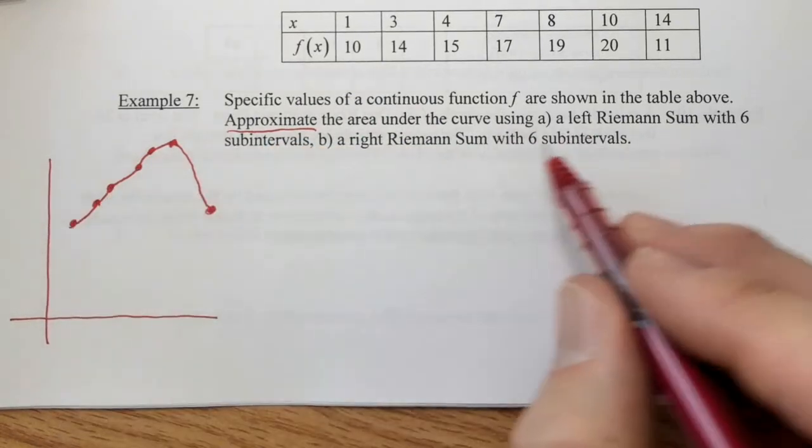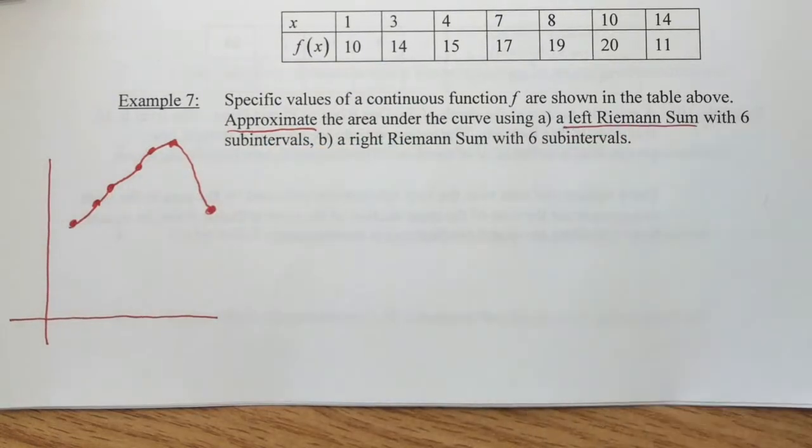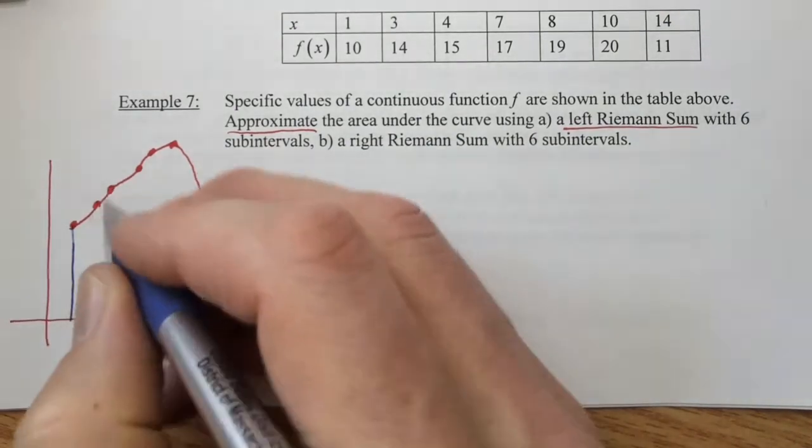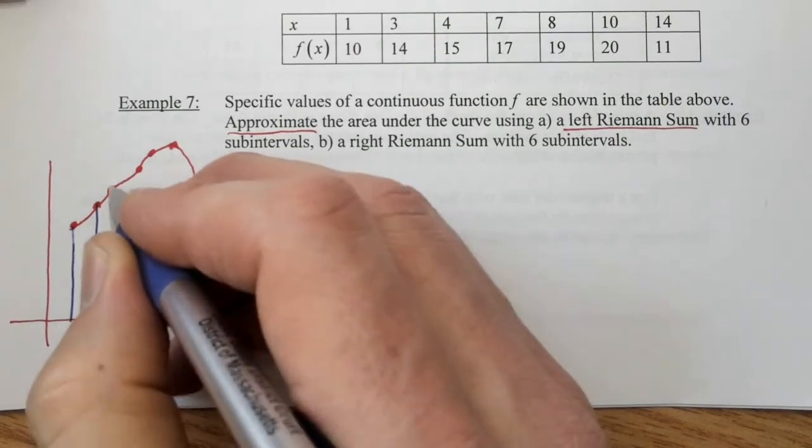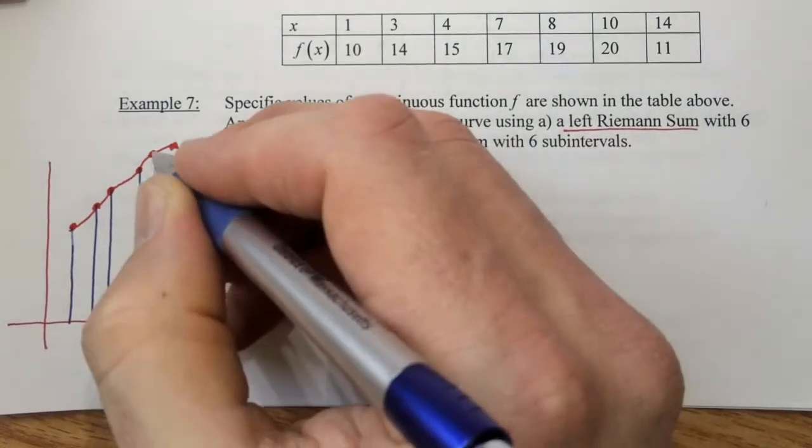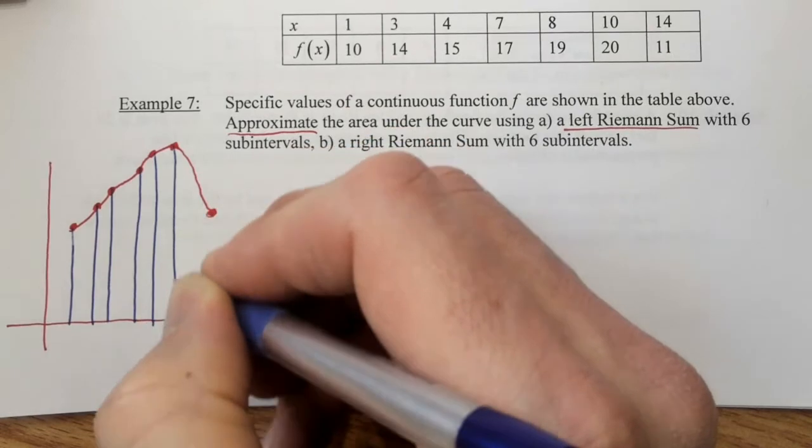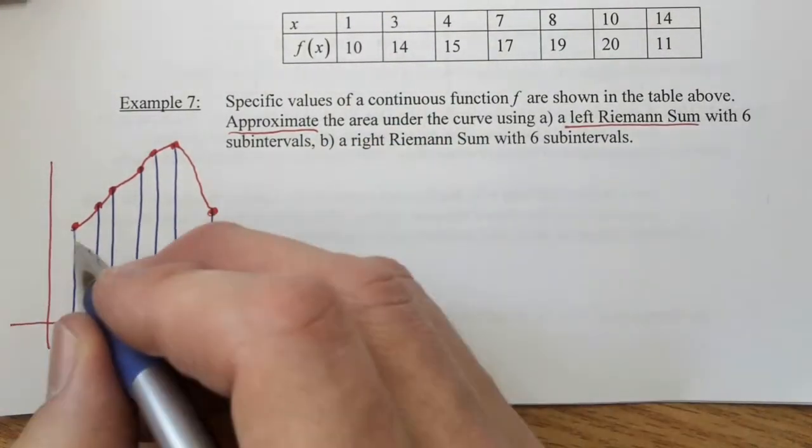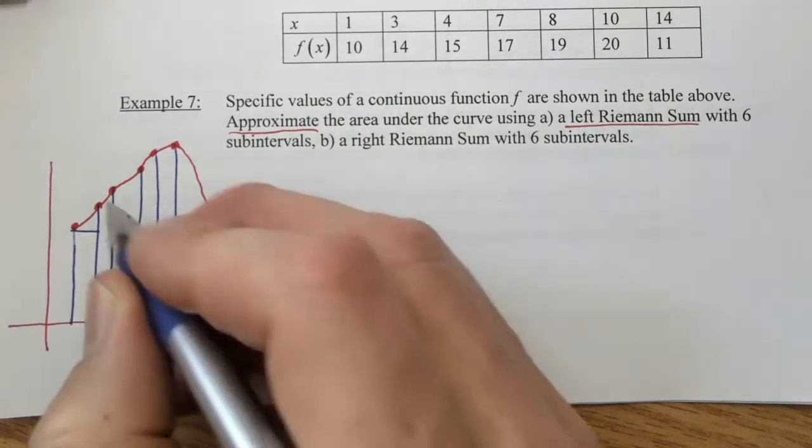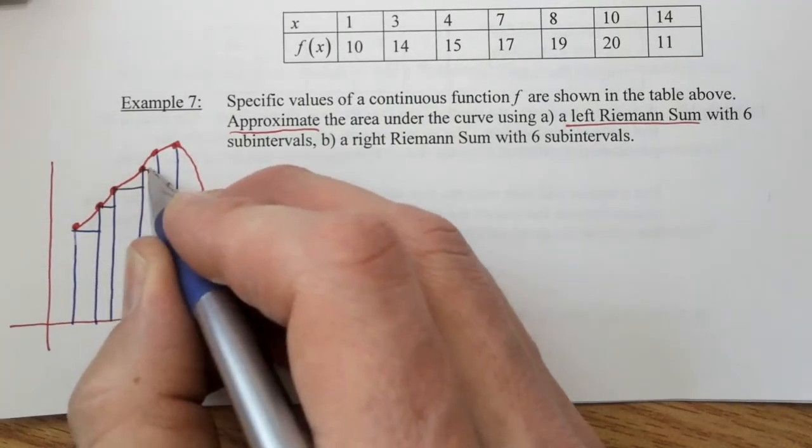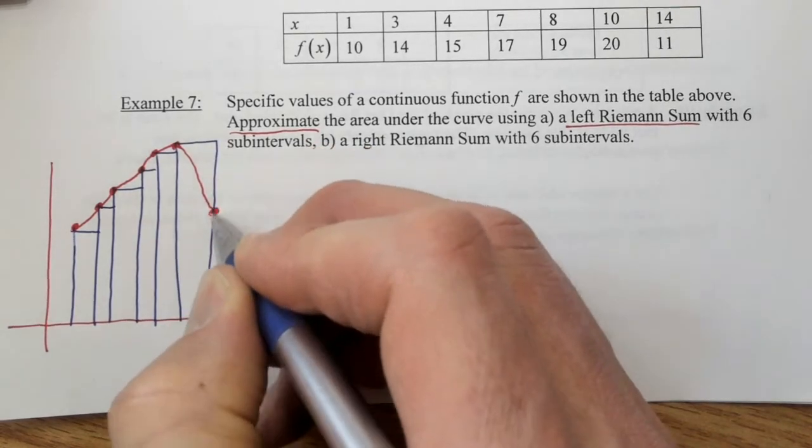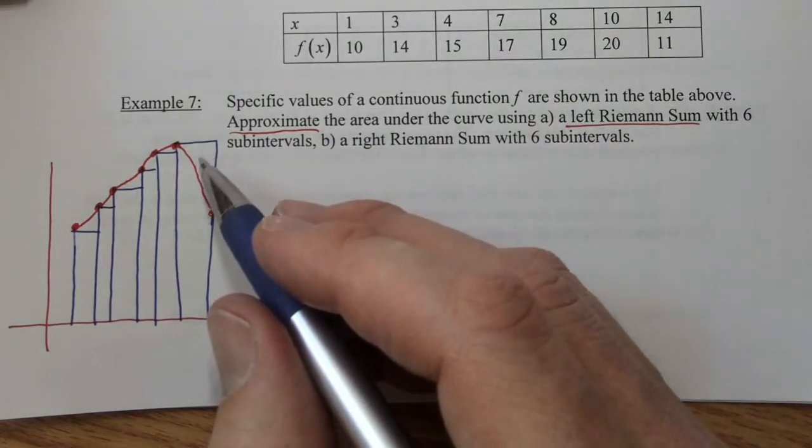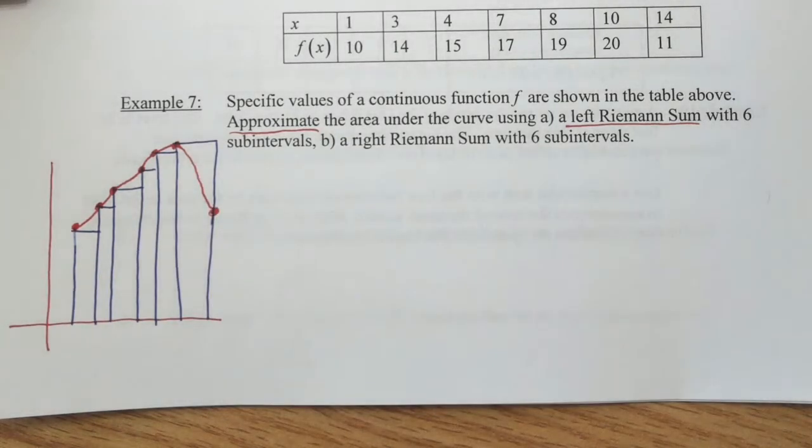We're interested in doing a left Riemann sum, which means we want the upper left corner of each of our rectangles to touch the curve. So I'm going to drop some verticals down here, each of these, and we're going to make some rectangles. So there's our first rectangle, and our second, our third, our fourth, our fifth, and then finally our sixth. The final rectangle is well above the function, but the previous five are all below.